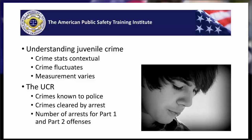We measure delinquency using many different techniques, each with its own strengths and weaknesses, and we shouldn't rely too heavily on any one method. The juvenile justice system relies on three primary techniques for collecting data: measuring crime through arrests, through self-report surveys, and through victimization surveys.